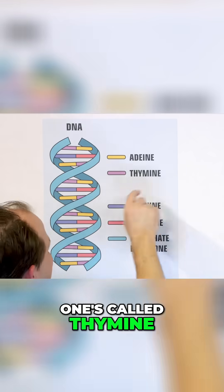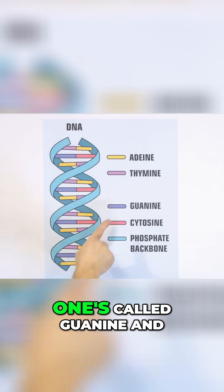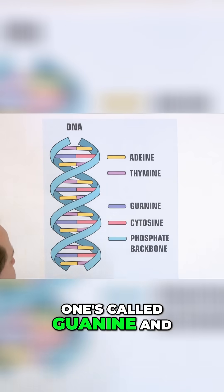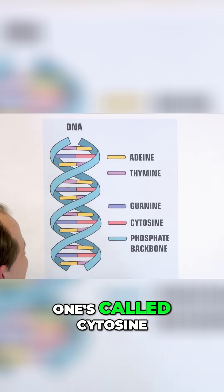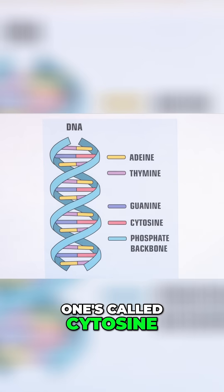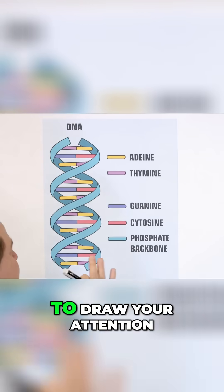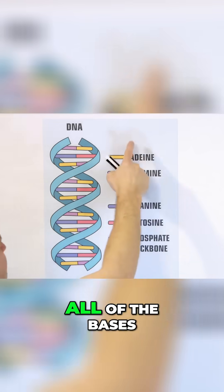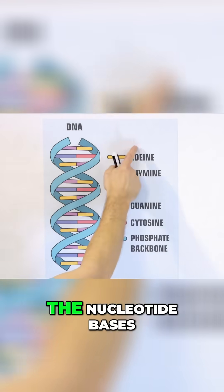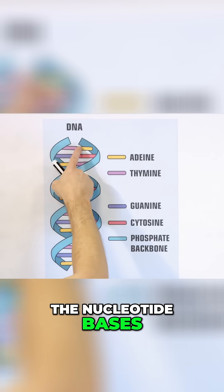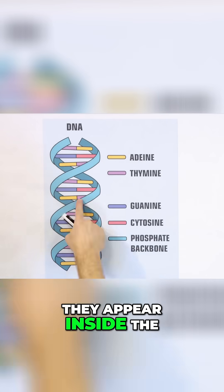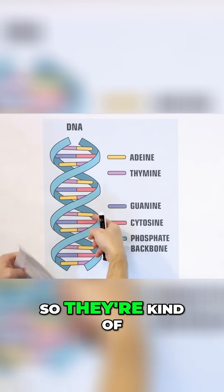One is called thymine, one is called guanine, and one is called cytosine. Now, one thing I want to draw your attention to is that all of the nucleotide bases appear inside the double helix.